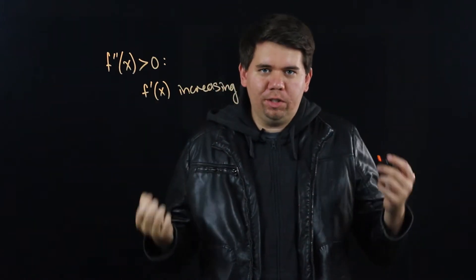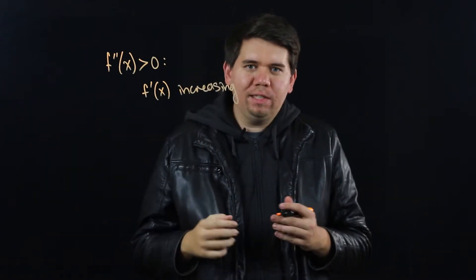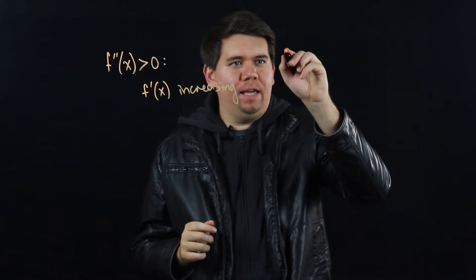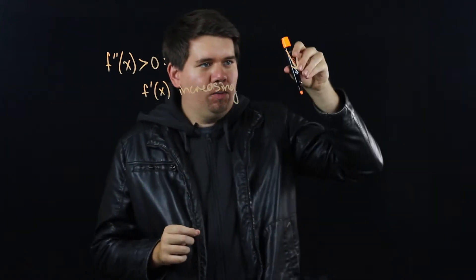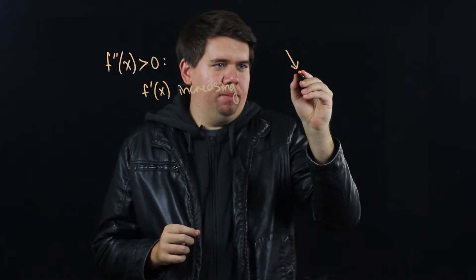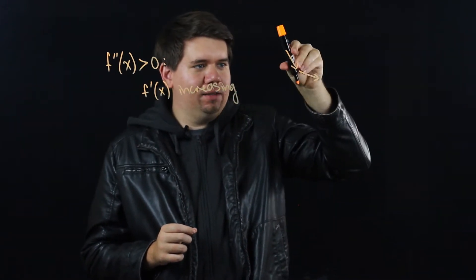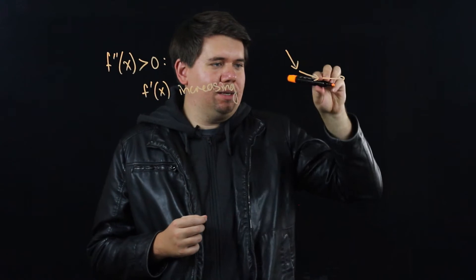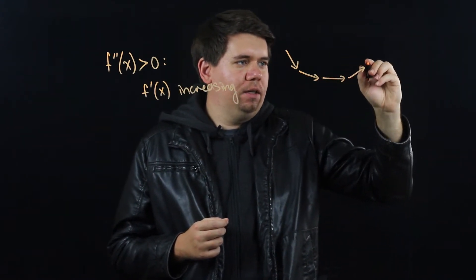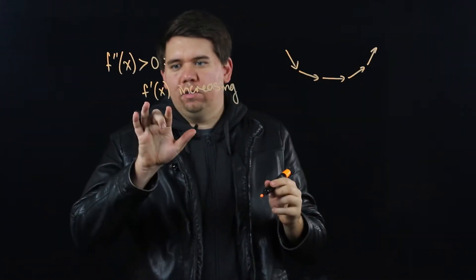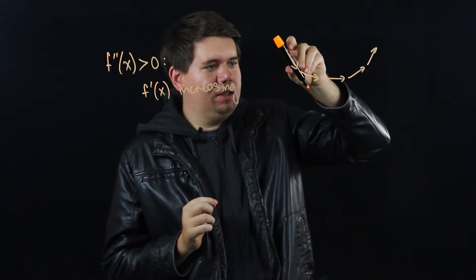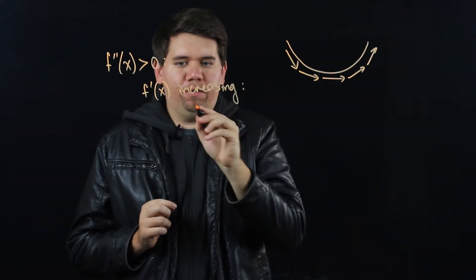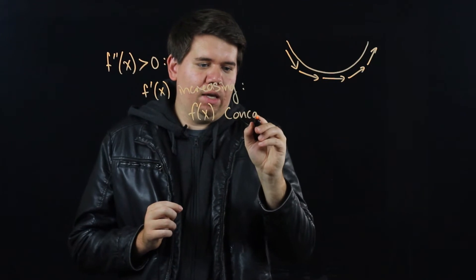But what does that tell you about the original function f? If f' is increasing, what does f look like? If f started out with some negative derivative, for that to increase it would need to become less negative — not sloping down as much. Eventually you'd get something with zero slope, then even positive. The general behavior of the derivative increasing means your function is going to be bending upward. We say that your function f is concave up.